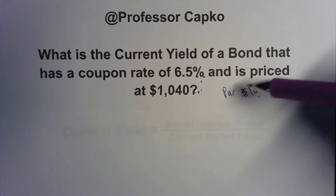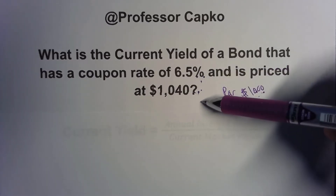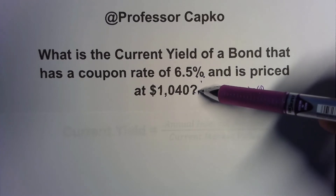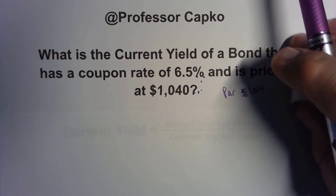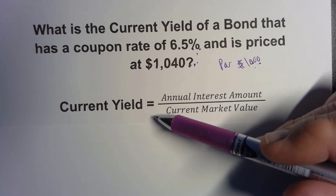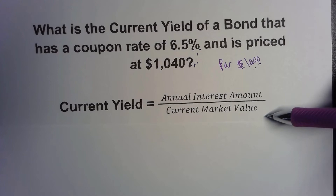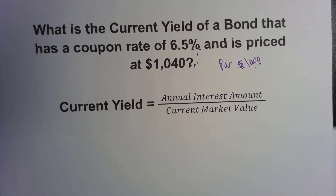Bonds trade inversely to the interest rate. So if interest rates go down, the bond price goes up. If interest rates go up, the bond price goes down. Now let's look at the formula: current yield equals the annual interest amount divided by the current market value. The first thing we need to figure out is what the annual interest amount is.